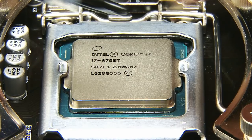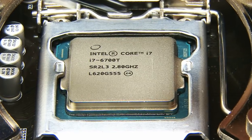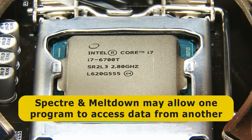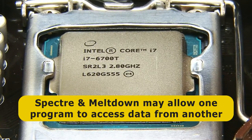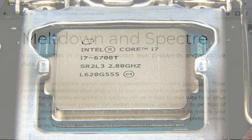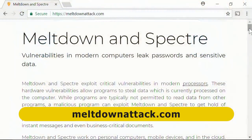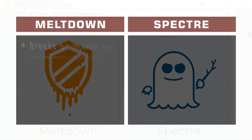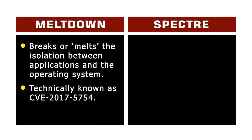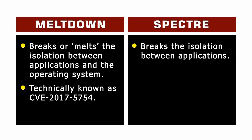Both Spectre and Meltdown refer to design flaws in modern microprocessors that may allow one program to access the memory-resident data of another. They were identified by several researchers, including those at Google Project Zero, and are documented on a website called MeltdownAttack.com, which even has its own logos. Meltdown breaks the hardware isolation supposed to exist between user applications and the operating system, while Spectre breaks the isolation between different applications.